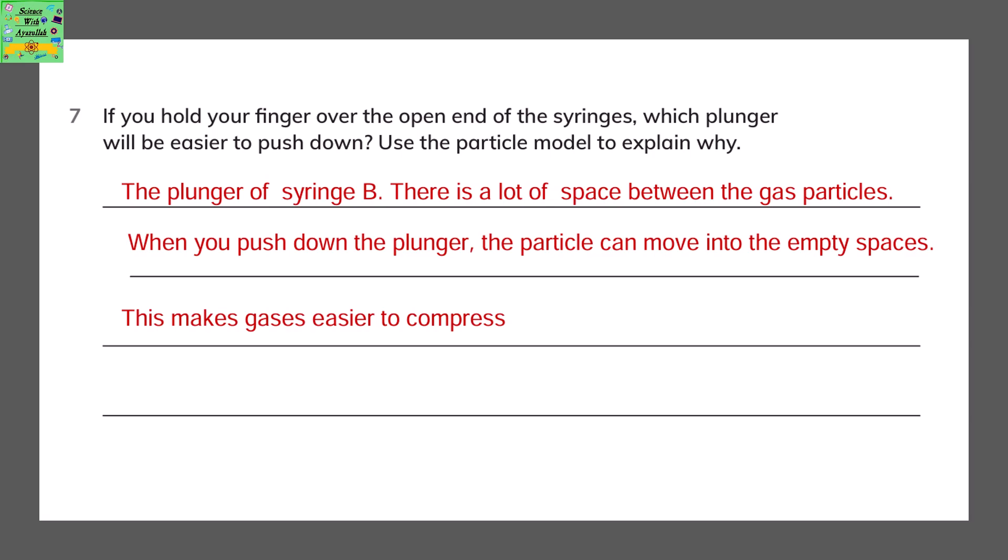If you hold your finger over the open end of the syringes, which plunger will be easier to push down? Use the particle model to explain why. The plunger of syringe B is easier to push down because there is a lot of space between the gas particles. When you push down the plunger, the particles move into the empty spaces. And this makes the gases easier to compress.